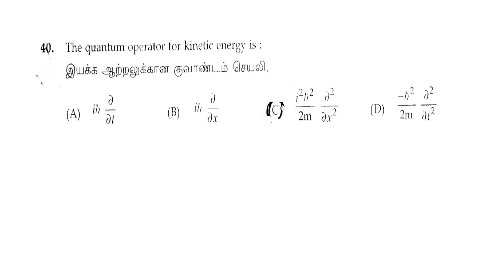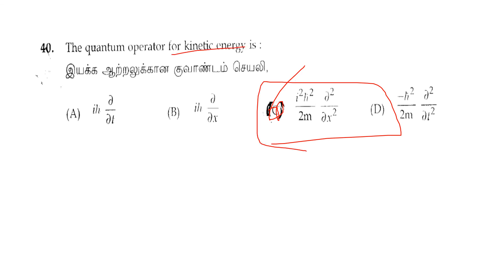The next question, question 40: The quantum operator for kinetic energy is Option C. The kinetic energy operator formula is −(ℏ²/2m)(∂²/∂x²). This is the correct answer. Hope you understand. If you have any doubt, put it in the comment box. Thank you, all the best.